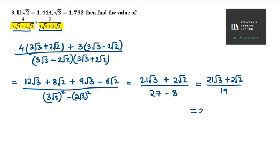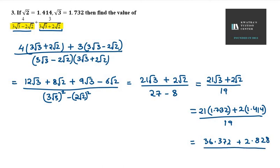Now what do you do? Substitute the √3 value and √2 value. √3 is 1.732 plus 2 times √2, which is 1.414. At the bottom, we have 19.